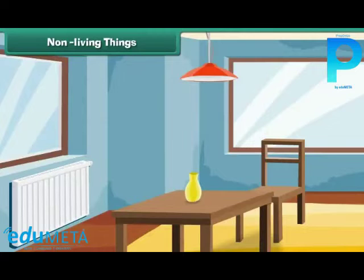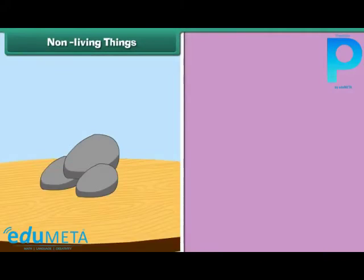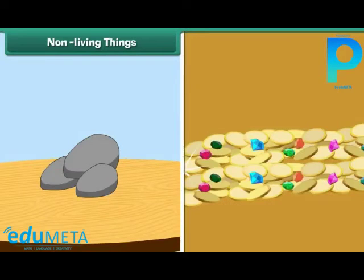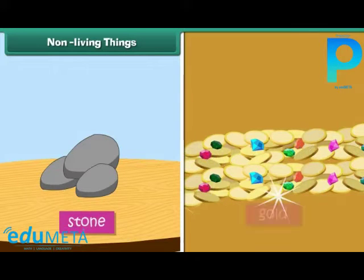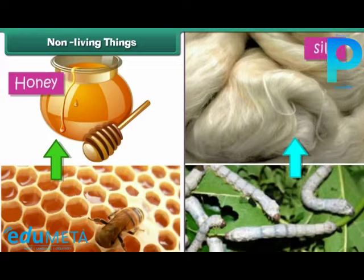Non-living things do not breathe, grow and reproduce. They do not have sensation. Some non-living things are natural, for example stone, gold, etc. Some non-living things are derived from living things, for example honey, silk, etc.